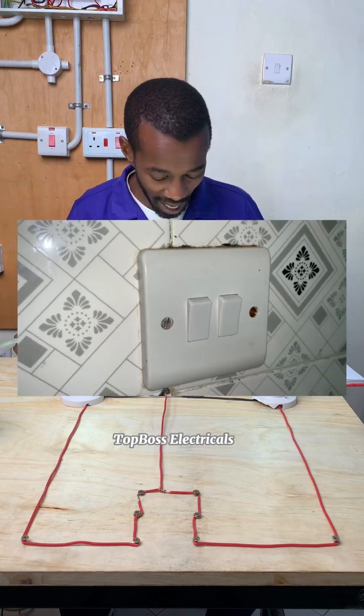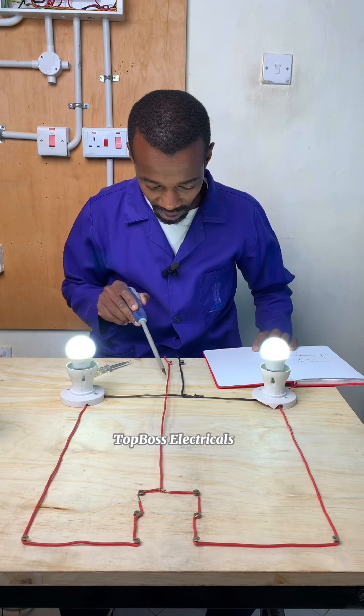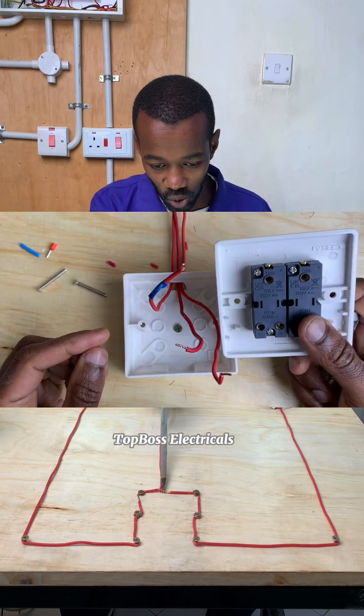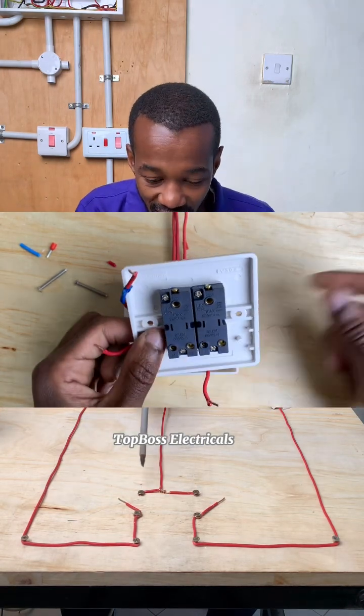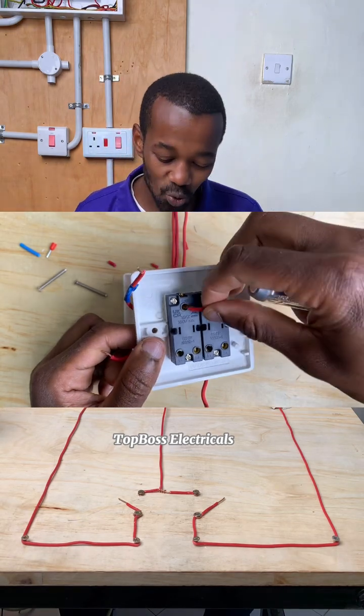What we have here is the supply coming from this point and it goes to feed these two gang switches. Remember, these two switches are independent, treated independently, but it is one switch unit.